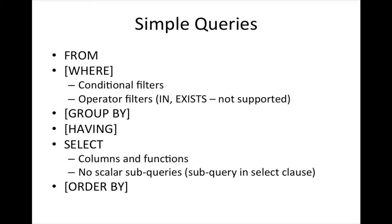Query evaluation starts with the FROM clause — the data from that table is read first. While the data is being read, in the MapReduce program generated, the mapper applies the filters defined in the WHERE condition, including conditional and operator filters like greater than or less than. For GROUP BY and HAVING, which involve aggregation, reducers are used. Once data is queried from the FROM clause table, after the WHERE filter in the mapper and GROUP BY/HAVING in the reducer, the results specified in the SELECT columns are returned to the Hive command line interface.